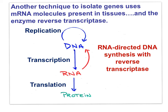One last technique to isolate the genes of interest uses the mRNA available in metabolically active cells to build the genes — the DNA — using an enzyme found in RNA viruses called reverse transcriptase. The beauty of using mature mRNA molecules to build the DNA gene is that the introns have been removed so that the DNA sequence that's built represents the pure gene.